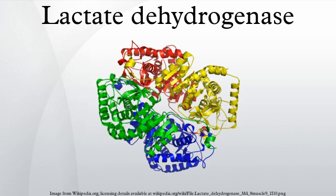In humans, the M and H subunits are encoded by two different genes. The M subunit is encoded by LDHA, located on chromosome 11p15.4. The H subunit is encoded by LDHB, located on chromosome 12p12.2-p12.1. A third isoform, LDHC or LDHX, is expressed only in the testis.